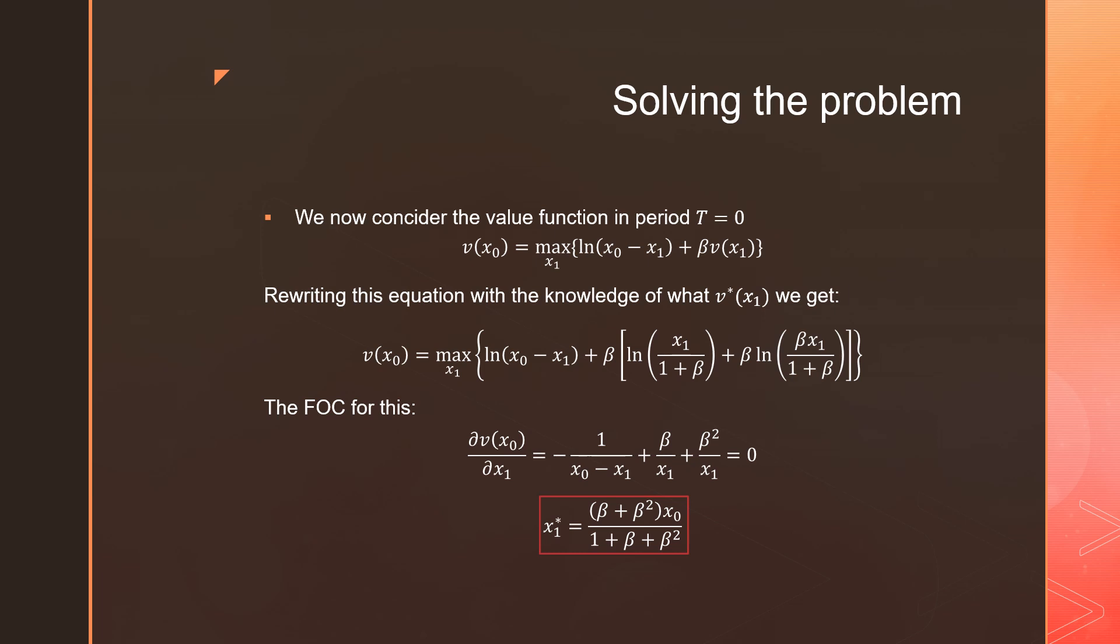We're plugging it into what our value function should be in period 0. If we take our first order condition, we get a completely different optimal value for what it should be in X_1.